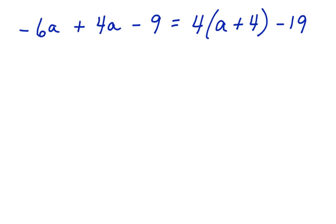We have negative 6a plus 4a minus 9 equals 4 times the quantity a plus 4 minus 19. Now, to work on this equation and solve for a, we're going to have to do a couple of things that you've done in previous concepts. First, we're going to have to combine like terms on the left side of the equation.